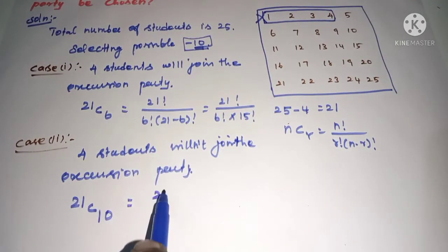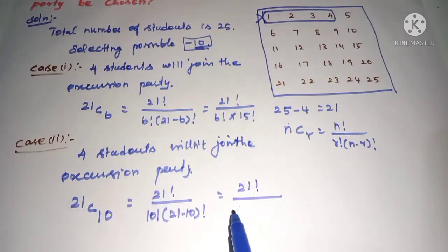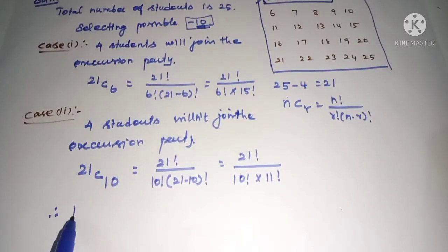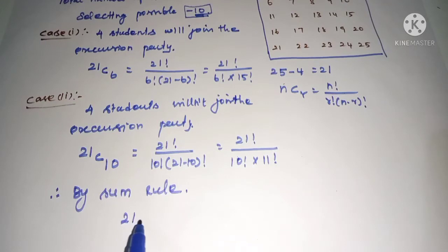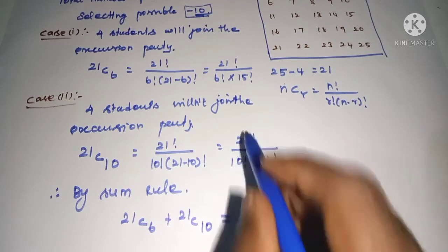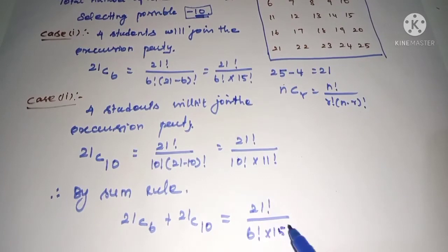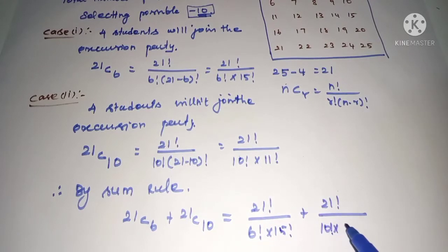For Case 2, we calculate 21C10: 21 factorial divided by 10 factorial into (21 minus 10) factorial, which is 21 factorial divided by 10 factorial into 11 factorial. Both cases are applicable, so by the sum rule, the total number of ways is 21C6 plus 21C10, equal to 21 factorial divided by 6 factorial into 15 factorial, plus 21 factorial divided by 10 factorial into 11 factorial.